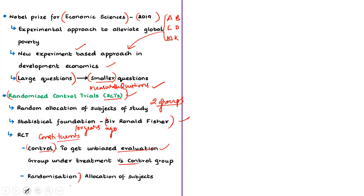Randomization means allocating patients among two treatments. If patients are aware of the treatment they are going to receive, they would be biased. In randomization, patients are allocated using a random mechanism, ensuring that neither the patient nor the doctor would know the allocation.